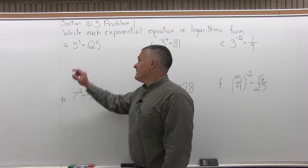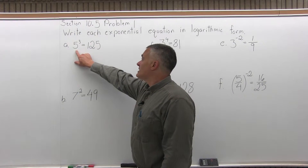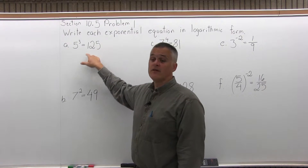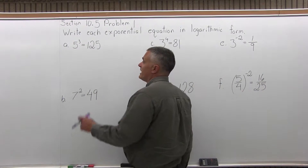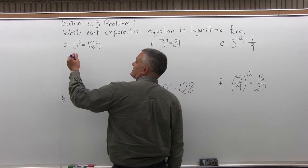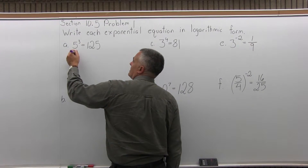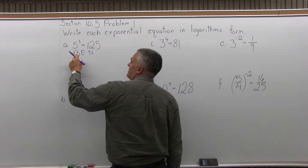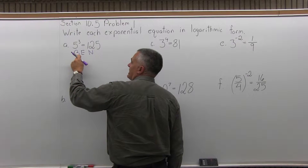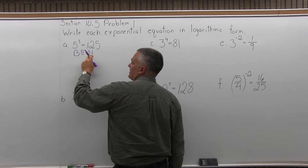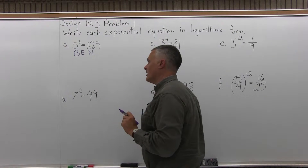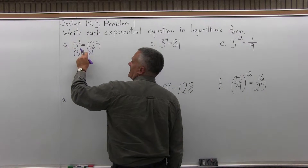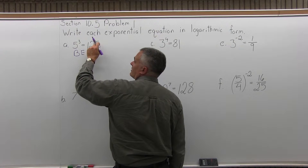Part A says write the exponential equation 5 to the third power equals 125 in logarithmic form. The way I convert these is by using the word BEN: the B stands for base, the E stands for exponent, and the N stands for number. In this problem, the base is 5, the exponent is 3, and the number is 125.